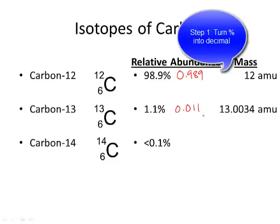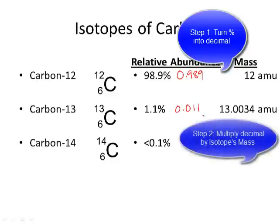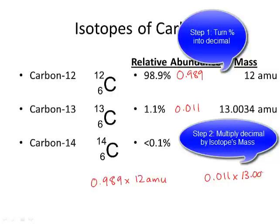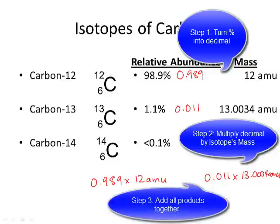Step two: multiply the decimal you just calculated by the mass of the respective isotope. The masses will be given to you. So we take 0.989 times 12 amu, and 0.011 times 13.0034 amu. Step three: now that we have the weighted masses of each isotope, we add them up. When you add them up, you will get your average atomic mass for that element.